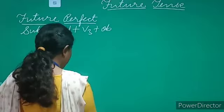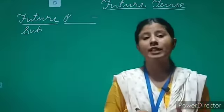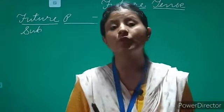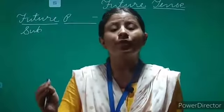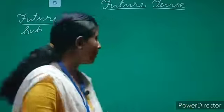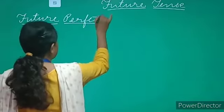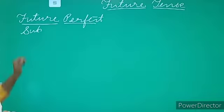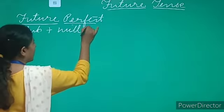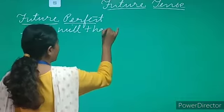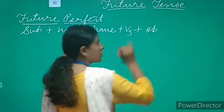So what is future perfect tense? We use future perfect tense for all the actions which will be completed in the future before any point of time. The structure is: subject + will + have + verb's third form + object.